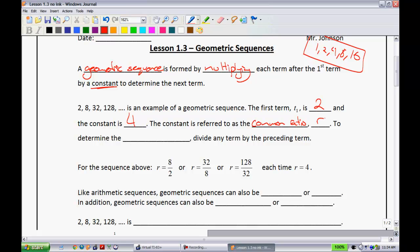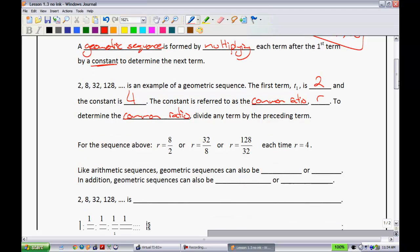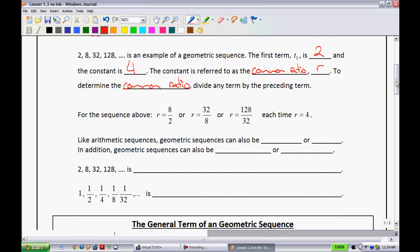To determine the common ratio, we're going to divide any term by the preceding term. So if we look up here, let's take these two terms. You're going to take the first term, which was 2, and then divide 8 by that. So 8 divided by 2, or I could have done 32 divided by 8, 128 divided by 32, whatever you want. Each time you still get that solution where your common ratio is equal to 4.